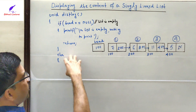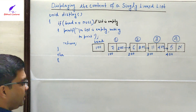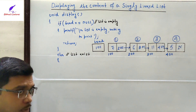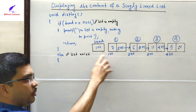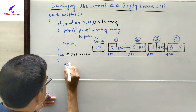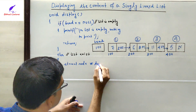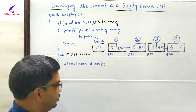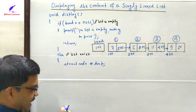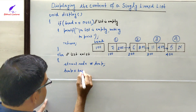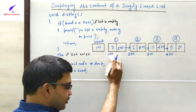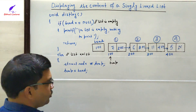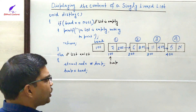In the else part — executed when the list is not empty — we first declare a node pointer: struct node* temp. We are not creating any new node; we just need to display the data parts. We then assign the content of head to temp: temp = head. This means the address of the first node (100) is now stored in temp, so temp is pointing to the first node.